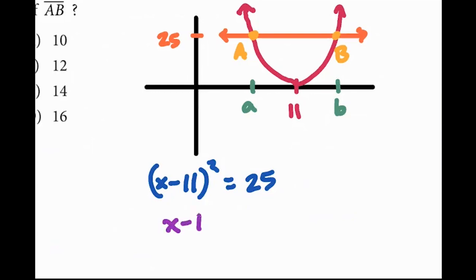First thing I'm going to do is square root both sides. So you're going to be left with x minus 11 equals plus or minus 5. Then I'm going to add 11 to both sides, and you're left with x equals 11 plus or minus 5, which is 16 or 6.